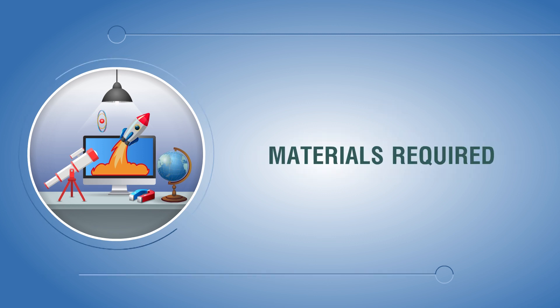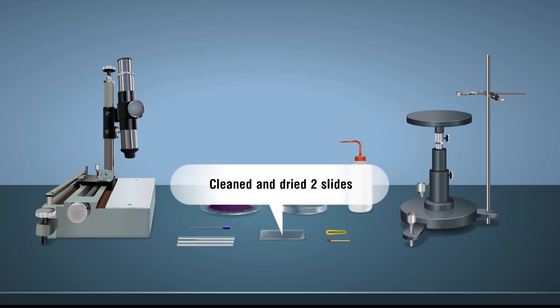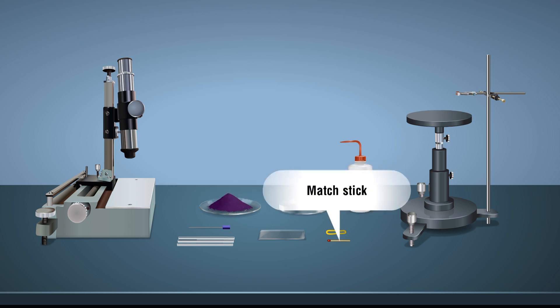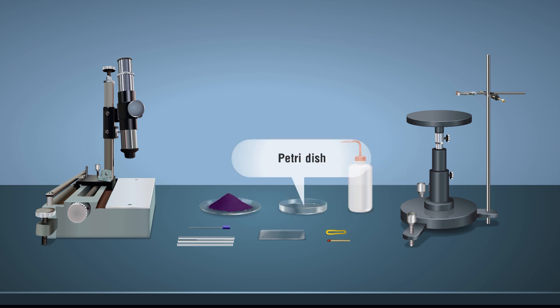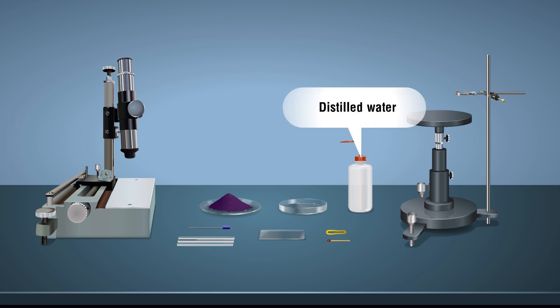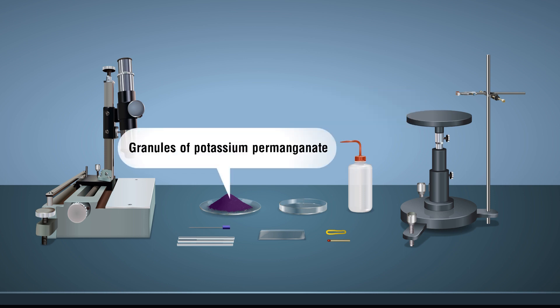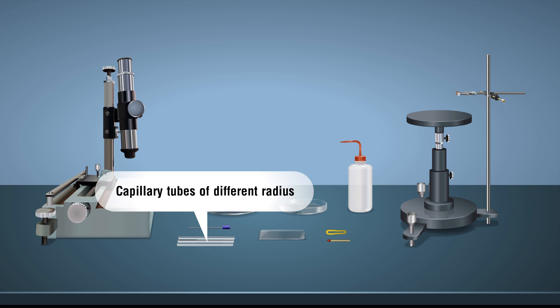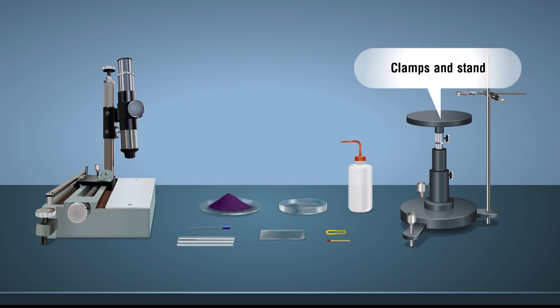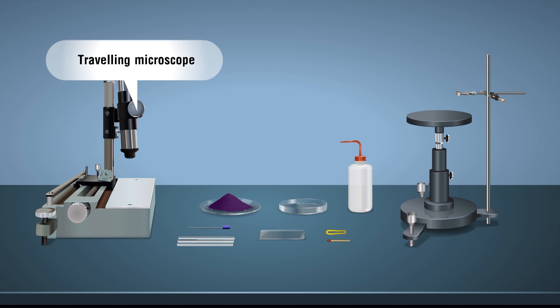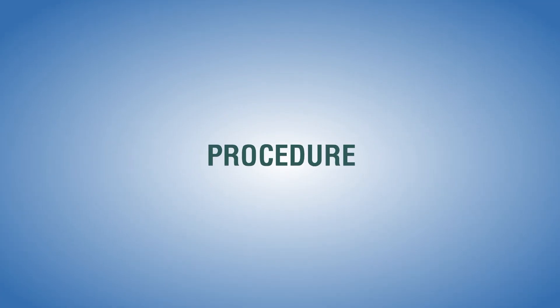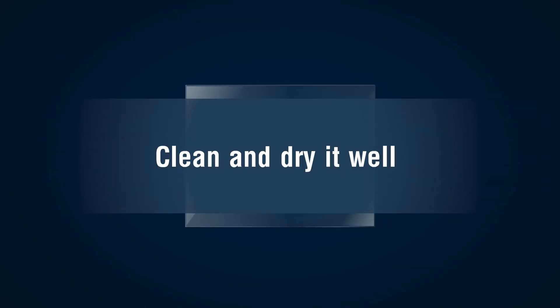Materials required: clean and dry two slides, rubber band, matchstick, petri dish, distilled water, granules of potassium permanganate, capillary tubes of different radius, clamps and stand, traveling microscope, pointer. Procedure: take two slides, clean and dry them well.